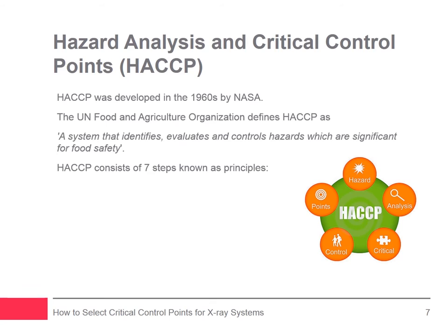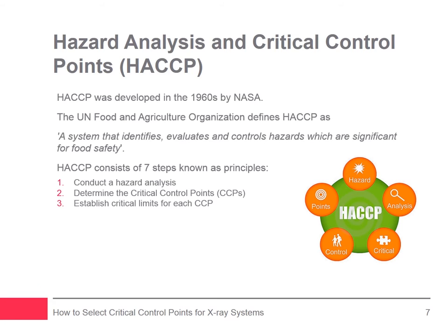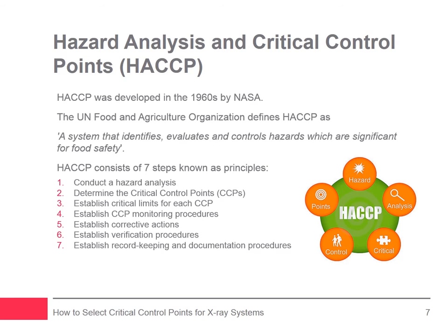HACCP consists of the following seven principles: 1. Conduct a hazard analysis. 2. Determine the Critical Control Points. 3. Establish critical limits for each CCP. 4. Establish CCP Monitoring Procedures. 5. Establish Corrective Actions. 6. Establish Verification Procedures. 7. Establish Record Keeping and Documentation Procedures.